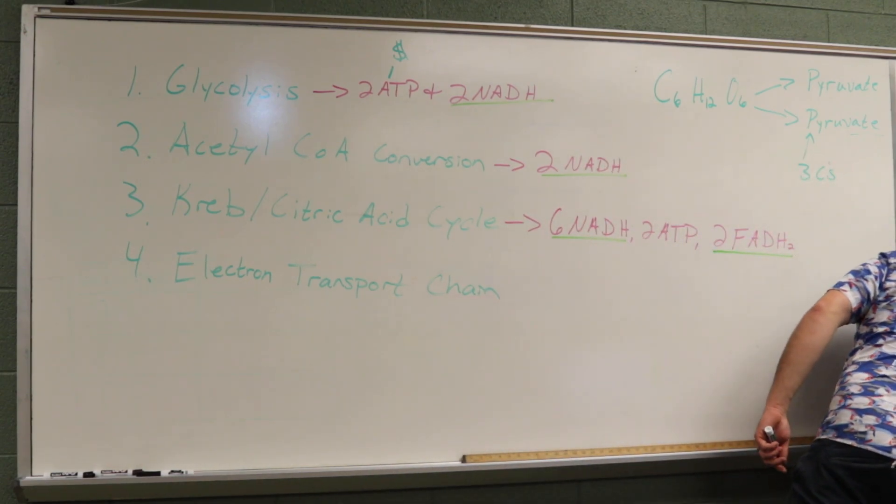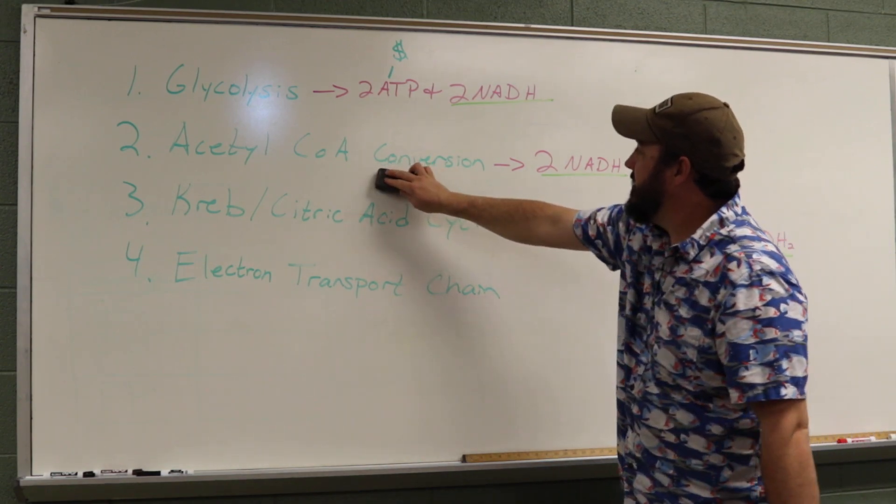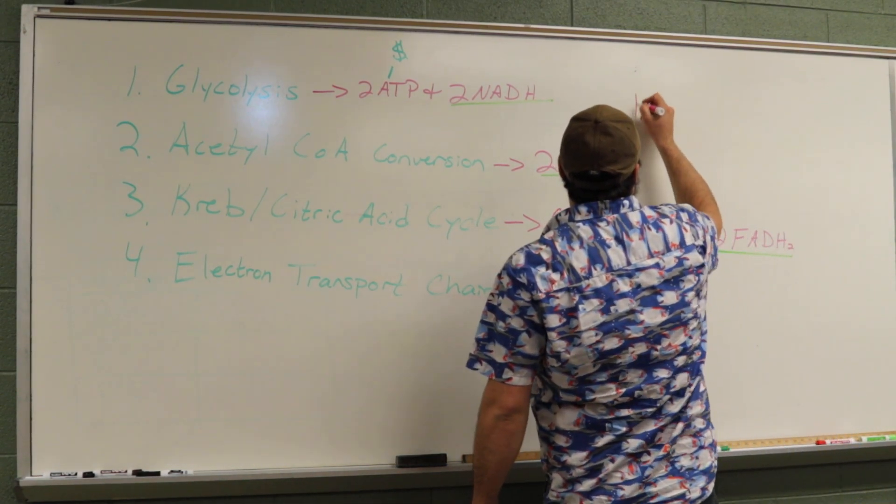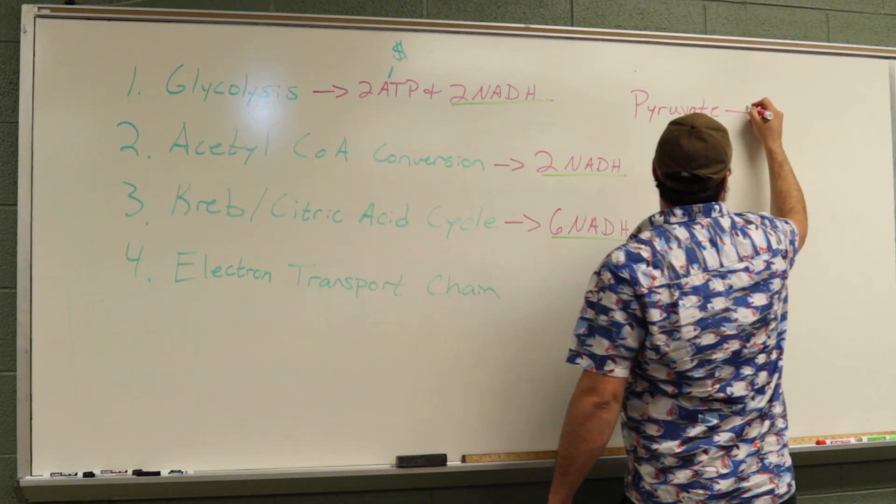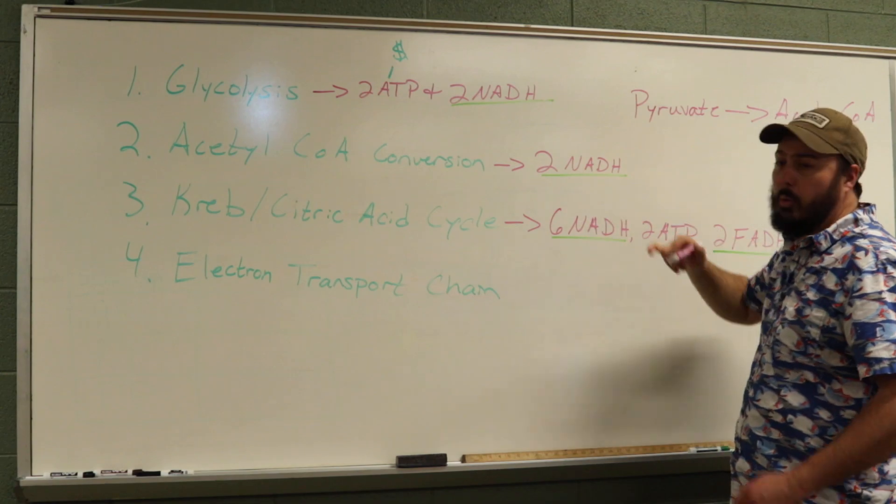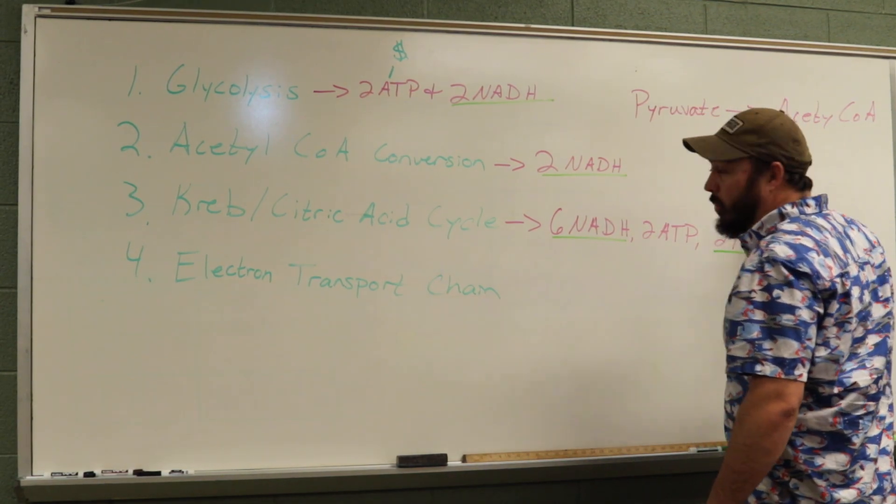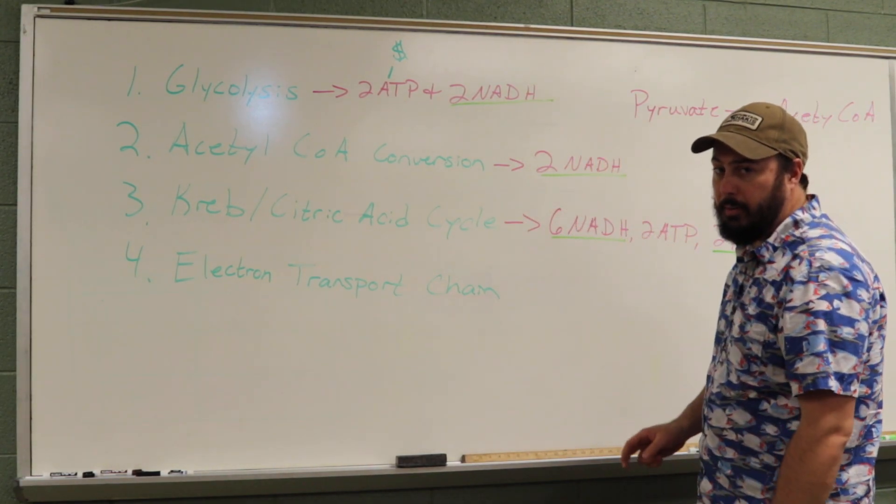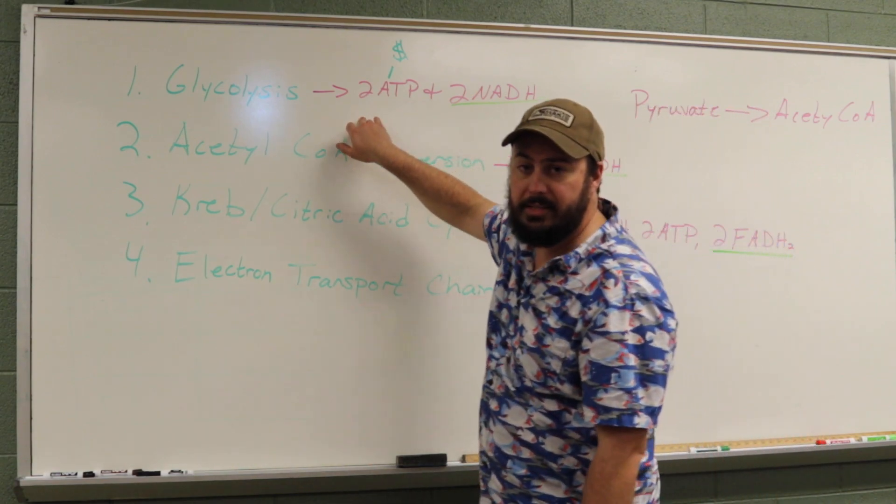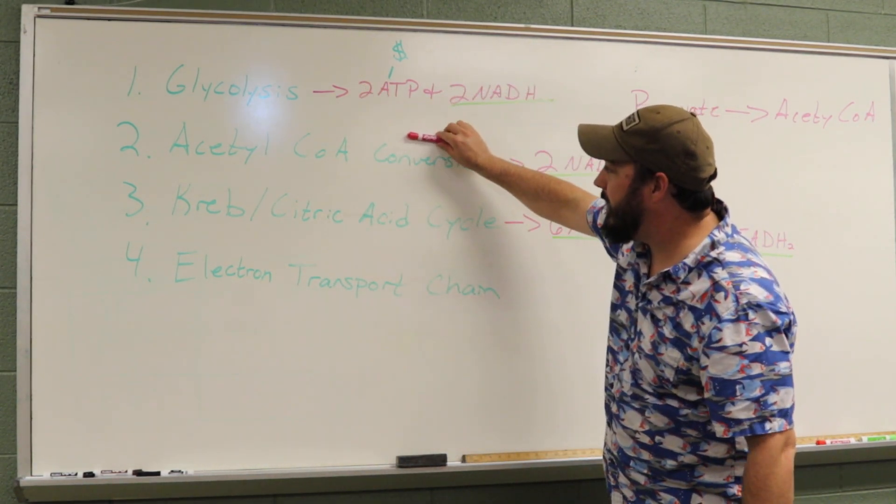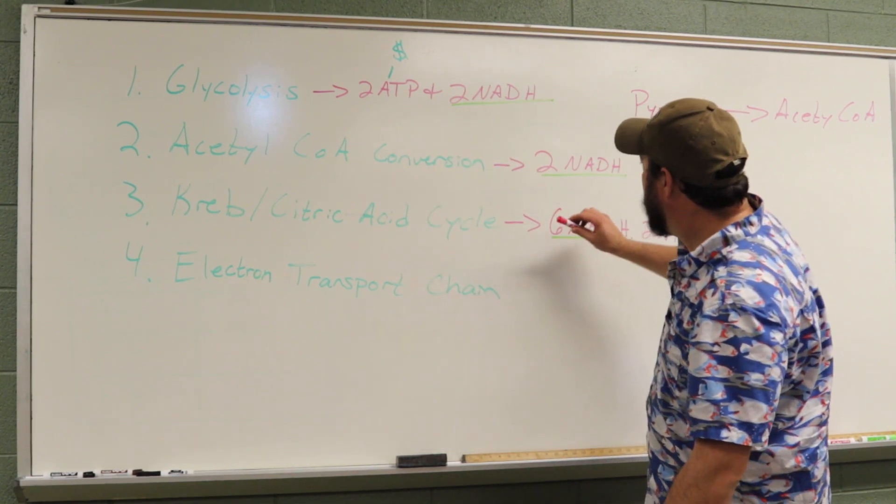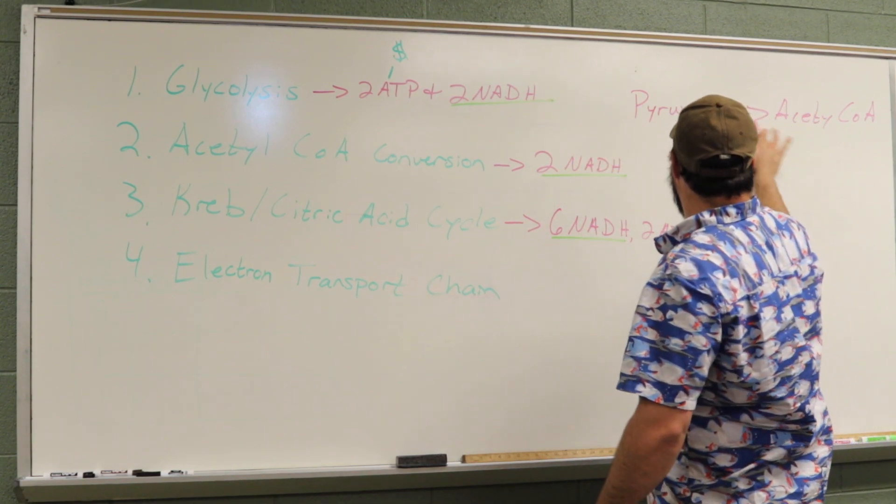Now, the reason that we're doing that is so we can go to the next step, which is acetyl-CoA conversion. In acetyl-CoA conversion, we take the pyruvate and we convert it into acetyl-CoA. By doing this, we release two NADH. What's interesting is one pyruvate into one acetyl-CoA is only one NADH. But from one glucose molecule, we make two pyruvates. So thus, we get two NADH. Glycolysis occurs in the cytoplasm of the cell. Acetyl-CoA conversion, Krebs cycle, and electron transport chain all occur within the mitochondria.